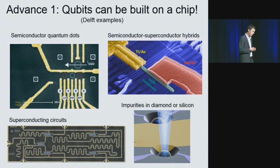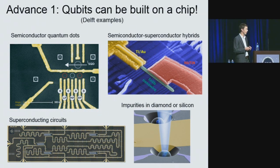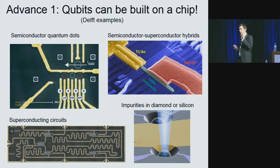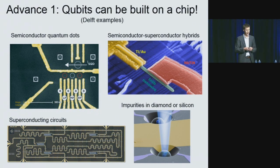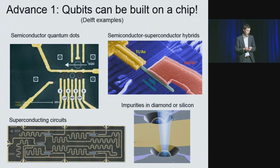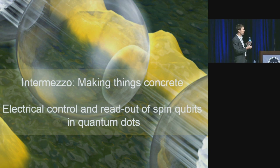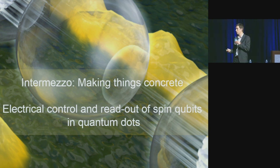The implementation I work on myself uses a quantum well a few hundred nanometers below the surface. Electrons move in this well, but we can isolate a single electron in each of three positions using voltages applied to gate electrodes on top. The spin of each of these electrons serves as a quantum bit. We can control and read out the state of individual electron spins on a chip using electrical signals.